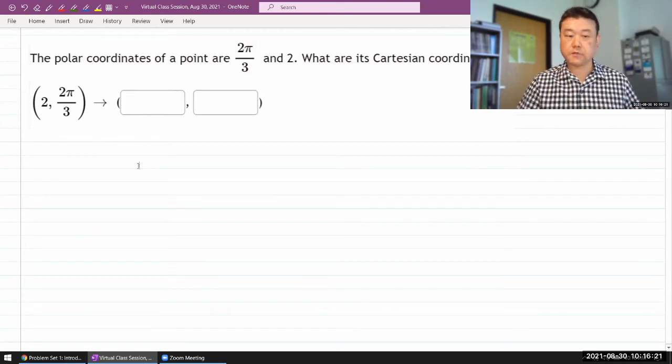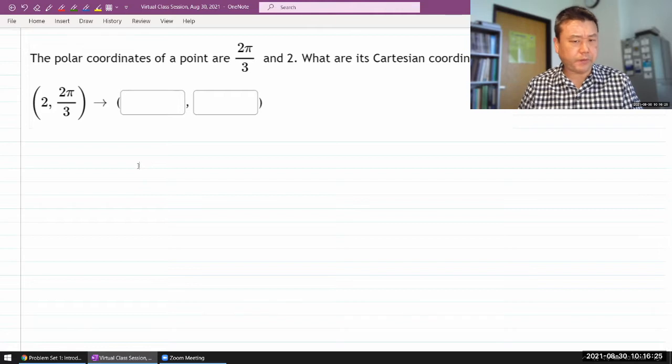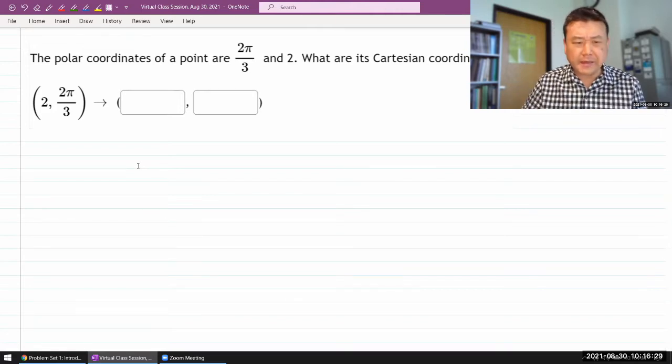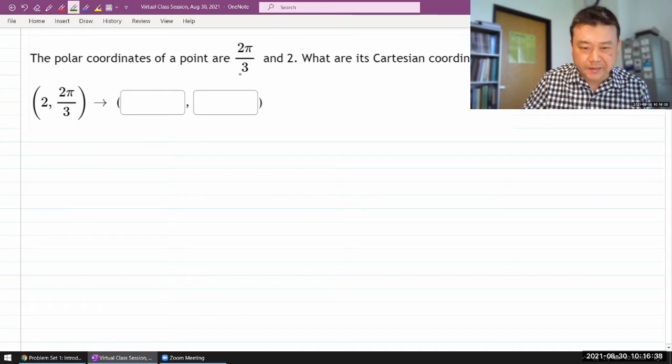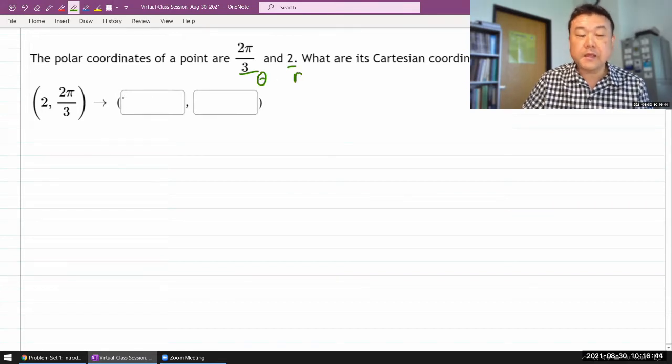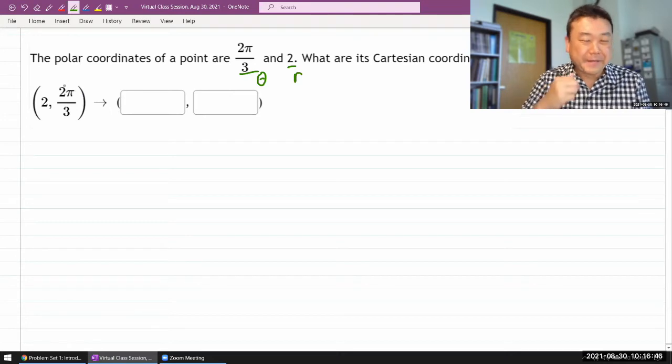Okay, it says the polar coordinates of a point are 2π over 3 and 2. I'm gonna take a hint from the π what these are supposed to be. I guess it could have been clearer telling you explicitly that this is referring to angle θ and this is referring to radius r, quite giving you enough, it's not spelling everything out.